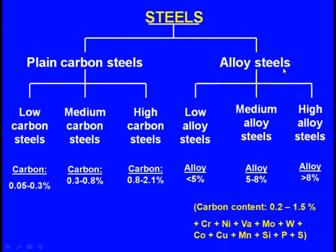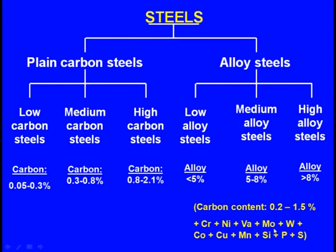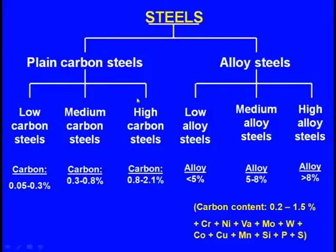In alloy steels, iron is also the base element and carbon is present, but carbon is not the main alloying element. Other elements such as chromium, nickel, vanadium, molybdenum, tungsten, cobalt, copper, manganese, silicon, phosphorus, and sulphur dominate. Plain carbon steels are sub-classified as: low carbon steels (0.05 to 0.3% carbon), medium carbon steels (0.3 to 0.8% carbon), and high carbon steels (0.8 to 2.1% carbon). When carbon content exceeds 2.1%, it is cast iron, not steel.